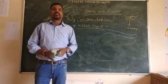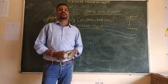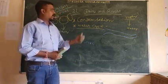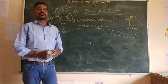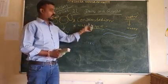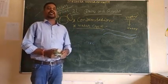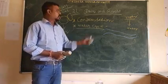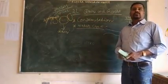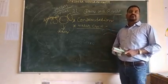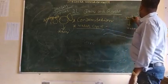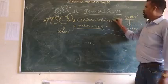Evaporation is nothing but the change of water into vapor. There are several water bodies on the earth's surface: ocean, sea, rivers, and land. There is a constant evaporation of water from these water bodies. This evaporation takes place due to increasing temperature. Next is condensation — the process in which vapor changes into water is called condensation.